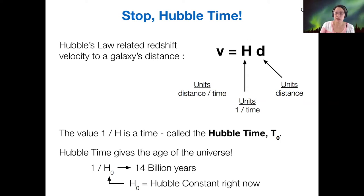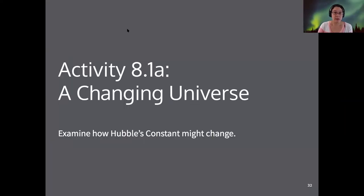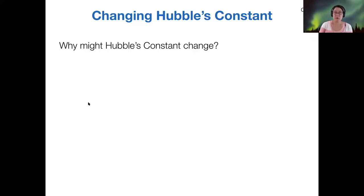But in general, H, the Hubble constant, is not necessarily constant. And we kind of gave you a homework problem a while ago that kind of probed at that idea a little bit. And I want to explore it a little bit further in today's first activity. So you're going to examine how Hubble's constant might actually change.